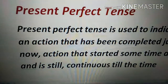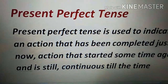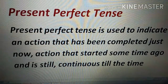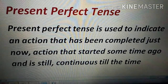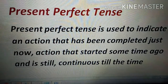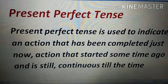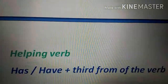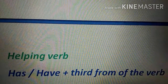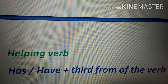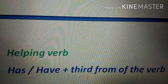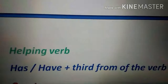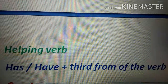Now we'll move to present perfect tense. Present perfect tense is used to indicate an action that has been completed just now — it talks about something you've just finished. It also describes an action that started some time ago and is still continuing till the present. The formula is: has/have plus the third form of the verb. Use 'has' with singular subjects and 'have' with plural subjects.